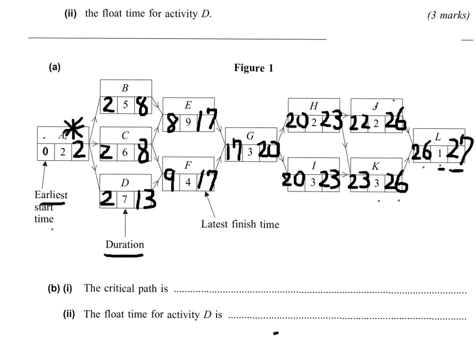No idle time in the middle. B starts on day 2, takes 5 days. So 2 plus 5 is 7. But B doesn't really have to finish until day 8, so it's got one day of idle time or float time. So B is not a critical activity.